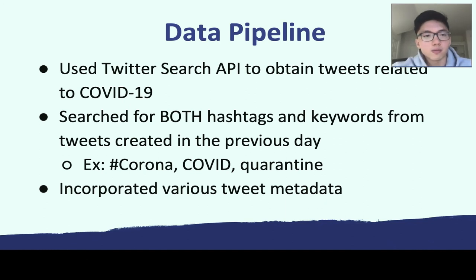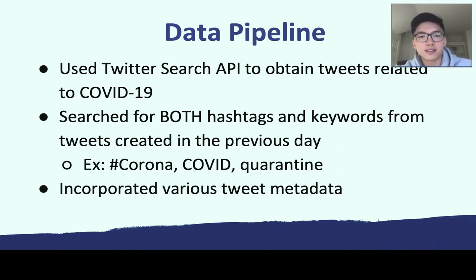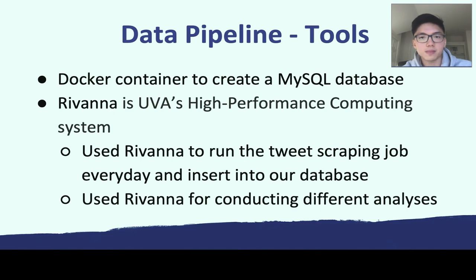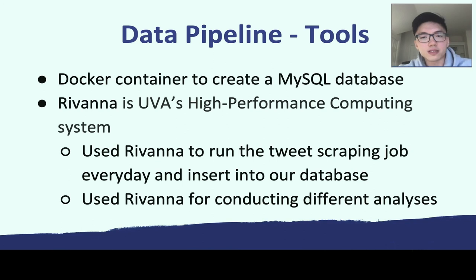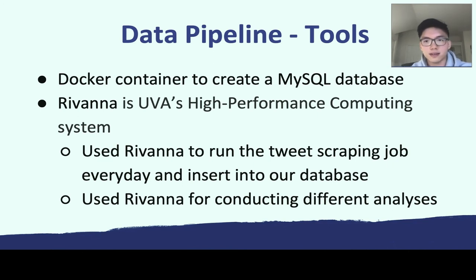Their data pipeline used the Twitter Search API to extract tweets related to COVID by searching for terms such as #corona, COVID, quarantine, and stay-at-home. Various tweet metadata were also stored. They created a Docker container to store a MySQL database, and used Rivanna — UVA's high performance computing system — to schedule daily jobs to obtain all tweets from the previous day related to COVID, inserting them into their database and conducting analysis.